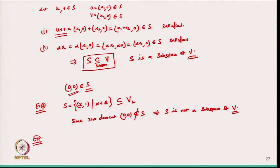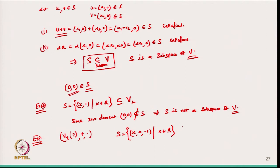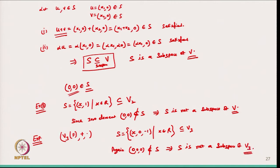Let us take another example. I take V₃ over the field F with usual addition and scalar multiplication — that is a vector space. I take S = {(x, 0, −1) | x ∈ ℝ}. Again, the zero element (0, 0, 0) does not belong to S, which implies that S is not a subspace of V₃.